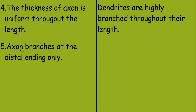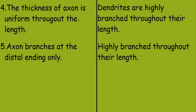The fifth point: axon branches at the distal ending only, while dendrites are highly branched throughout their length.